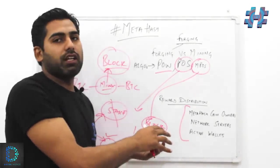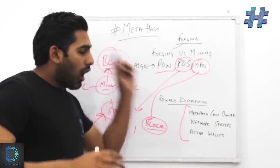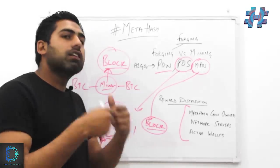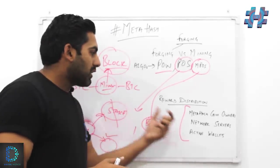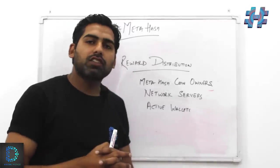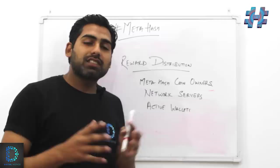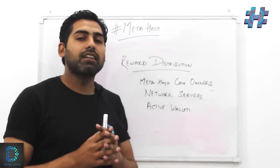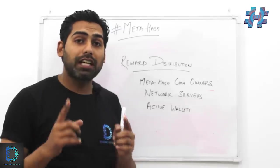Now let's talk about how exactly forging is set up and how exactly the reward distribution is being done in case of MetaHash. In the case of MetaHash, the rewards are distributed amongst the network because we know that the block generation was not done single-handedly—all the participants in the network came together to form that block.